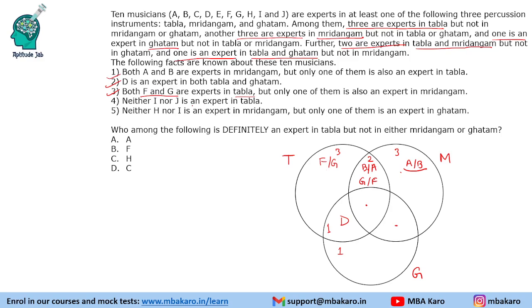Neither I nor J is expert in tabla, so I and J cannot come in the tabla region. Neither H nor I is expert in mridangam. I is not expert in tabla and not expert in mridangam either, so I will be expert in ghatam. Now for ghatam, only one person is expert in only ghatam, so the ghatam region is filled. I or J is not expert in tabla, and since ghatam is filled, J should not be expert in ghatam either. So J must be expert in mridangam. Similarly, H is not expert in mridangam and not expert in ghatam, so H will be expert in tabla. And I is the only one who is expert in ghatam.